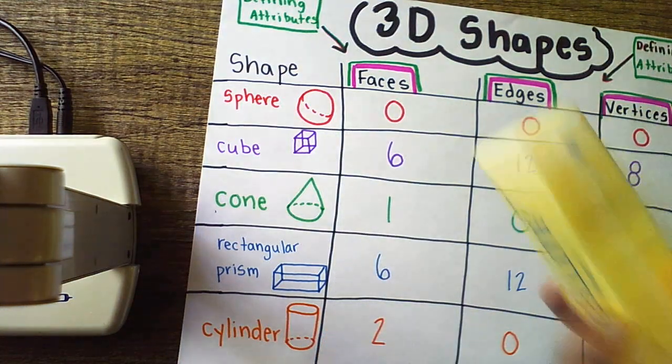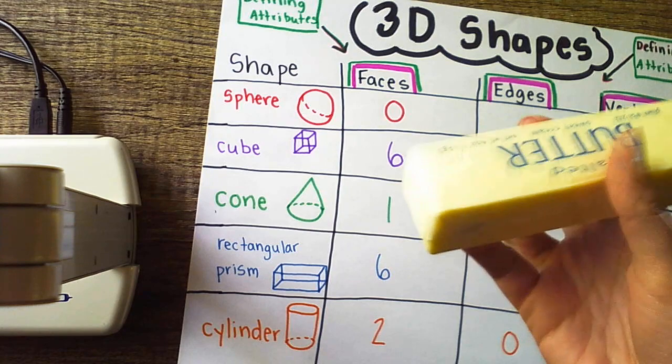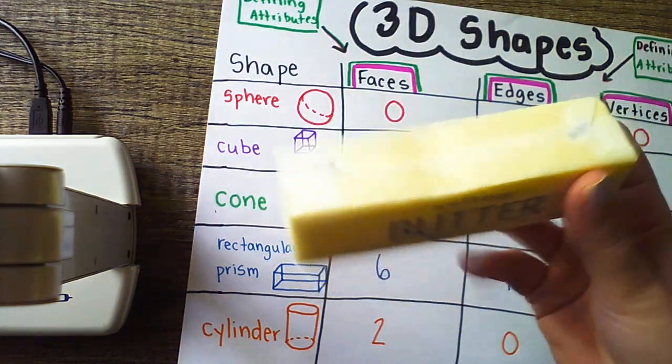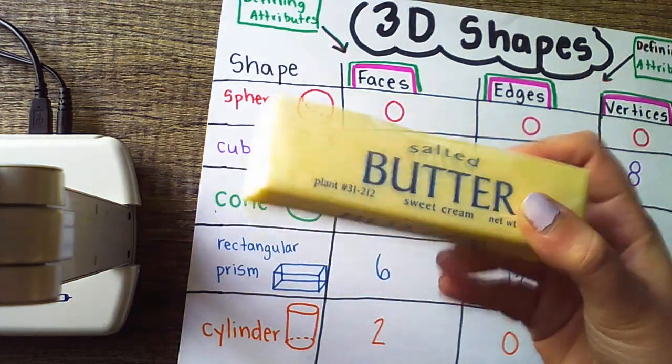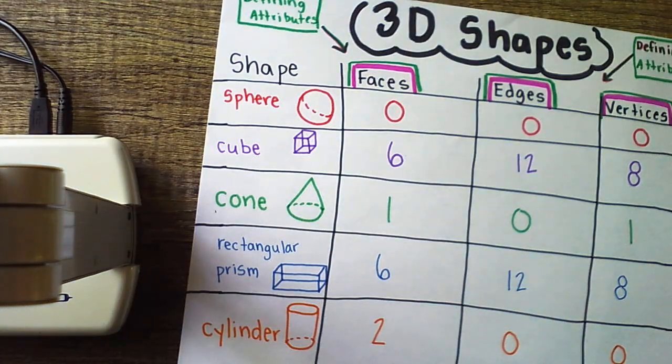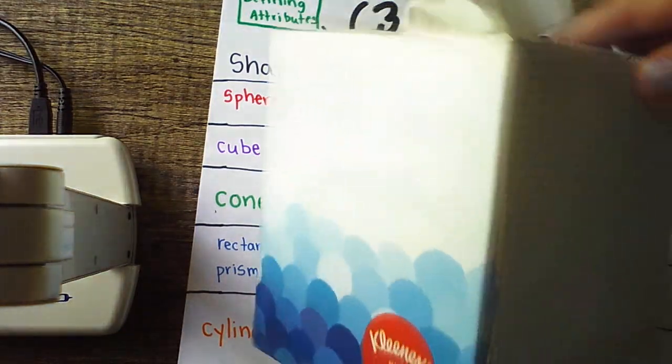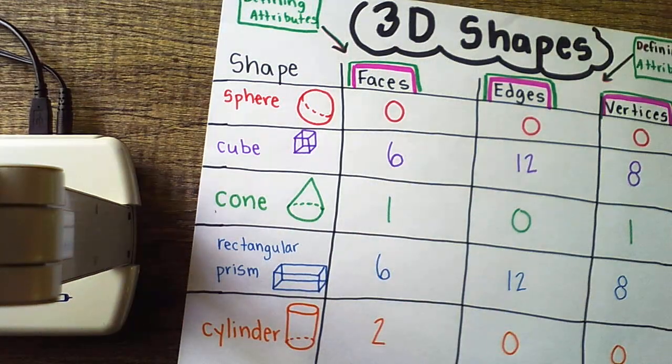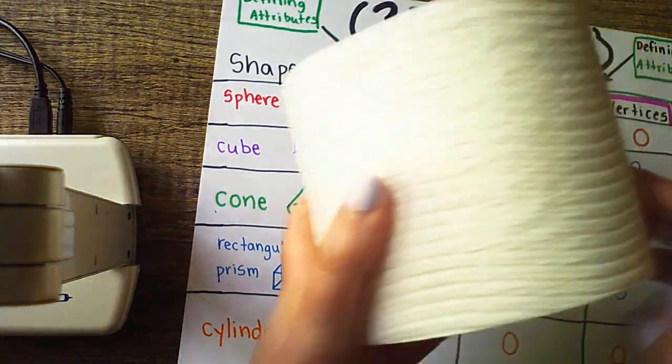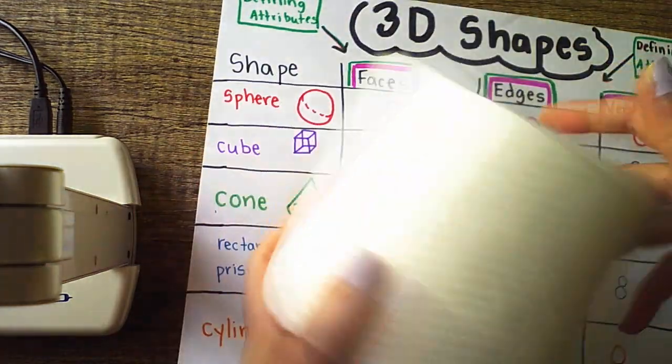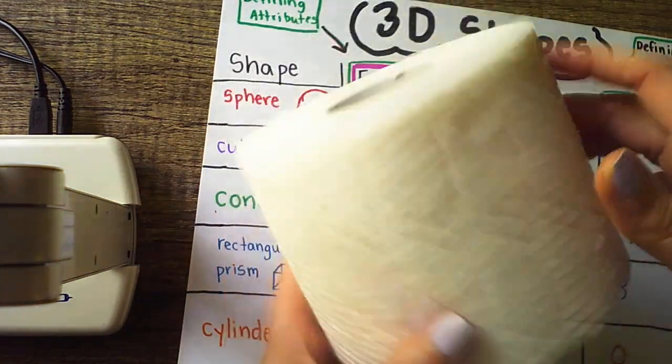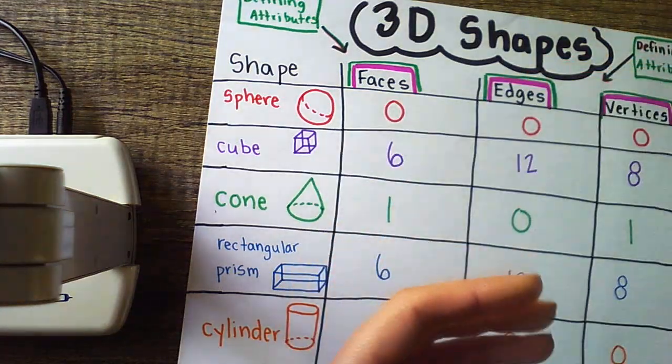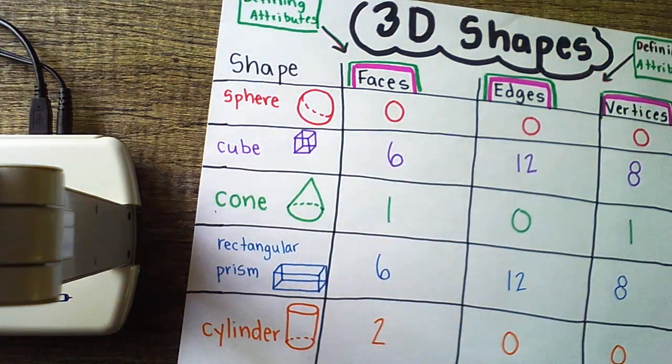I'll bet you anything if you go into that fridge, of course with permission, that you've got a rectangular prism of butter. I'll bet you, if you go in the bathroom, you have a cube of tissues that you can use. I'll bet you, if you look in the bathroom, you'll also find a cylinder of toilet paper that you could use to build or compose 3D shapes.